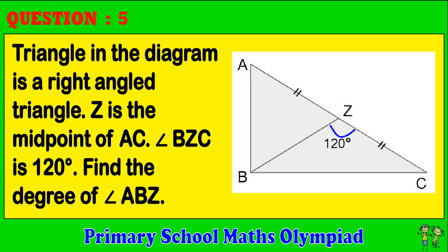Question 5. Triangle in the diagram is a right-angled triangle. Z is the midpoint of AC. Angle BZC is 120 degrees. Find the degree of angle ABZ.